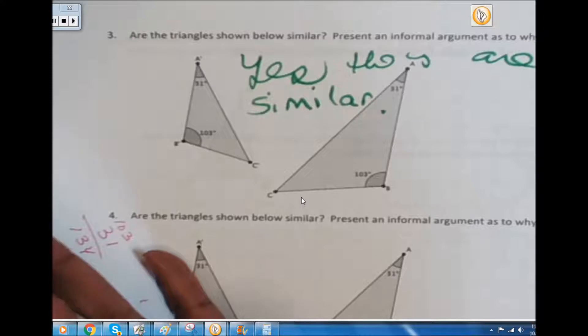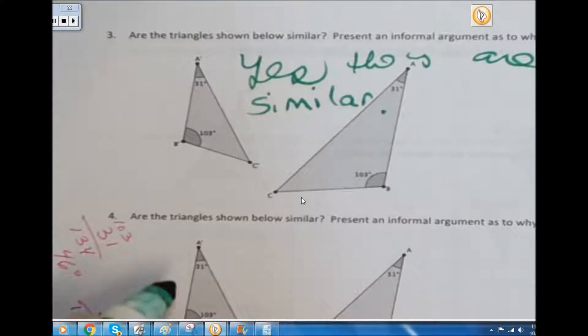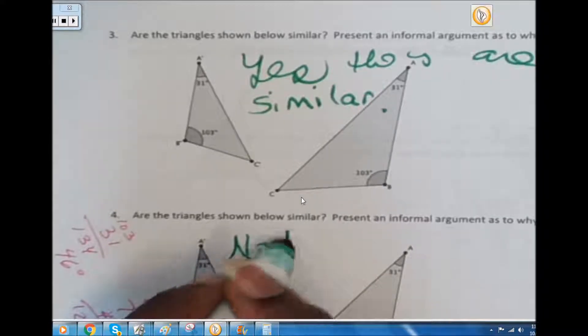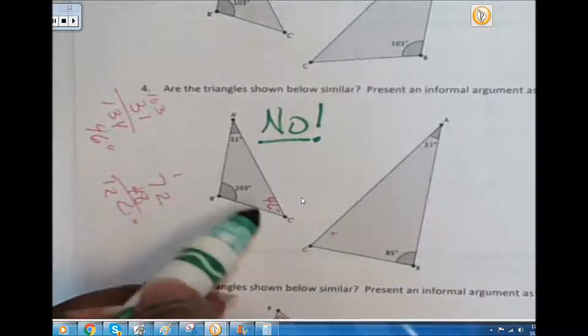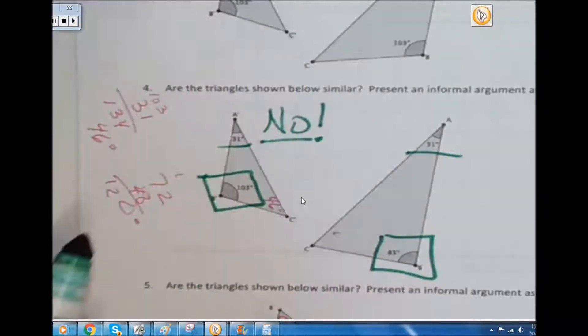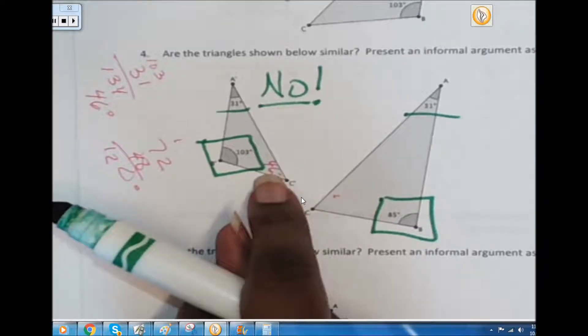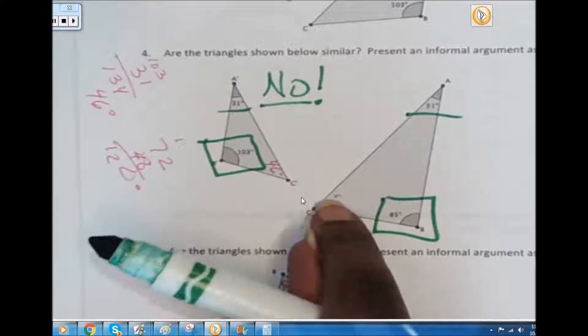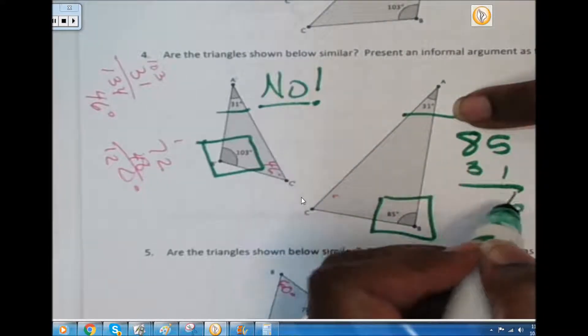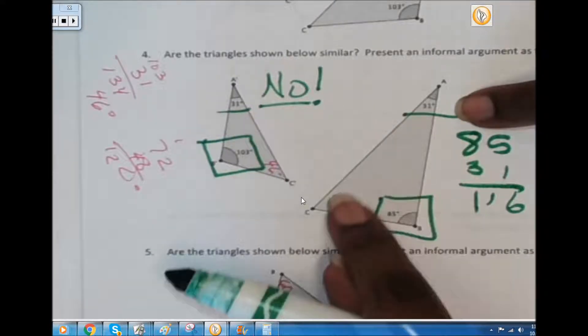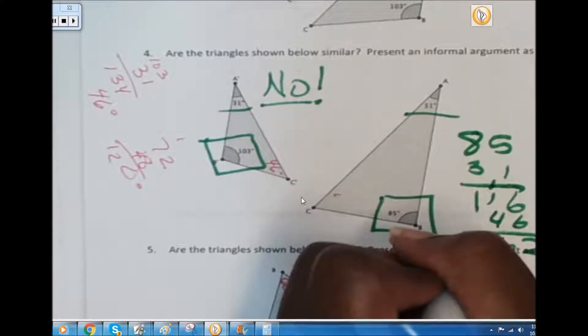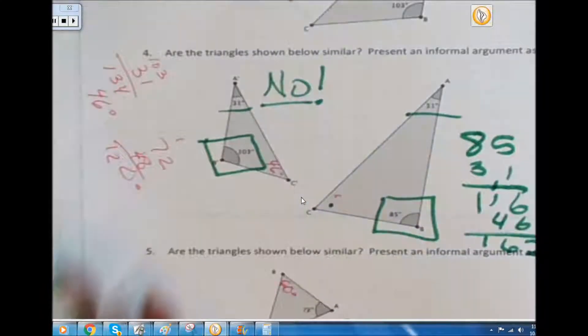All right, now look at number four and you decide. Now if you said no, you are correct. The reason why is because while angle A for both of them are the same, angle B and angle B are different. And I went a little further and I checked angle C on the first triangle and it was 46 degrees. And I know that this angle C cannot be 46 degrees. But if I was to do the math I would add 85 and 31, that's 116, and I know I need 180 degrees in this triangle. So if I add 46 to this, this is not 180 degrees, 162. So I know that that's not 46, so then I know that they're not similar.